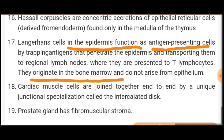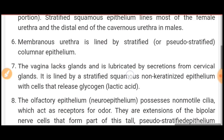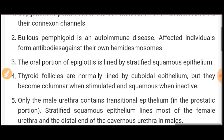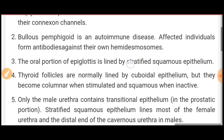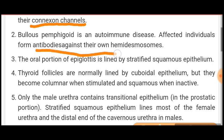Cardiac muscle cells are joined end to end by a unique junction called the intercalated disc. The prostate gland has fibromuscular stroma. Gap junctions permit cell-to-cell communication via connexin channels. Bullous pemphigoid is an autoimmune disease with antibodies directed against the patient's own hemidesmosomes.